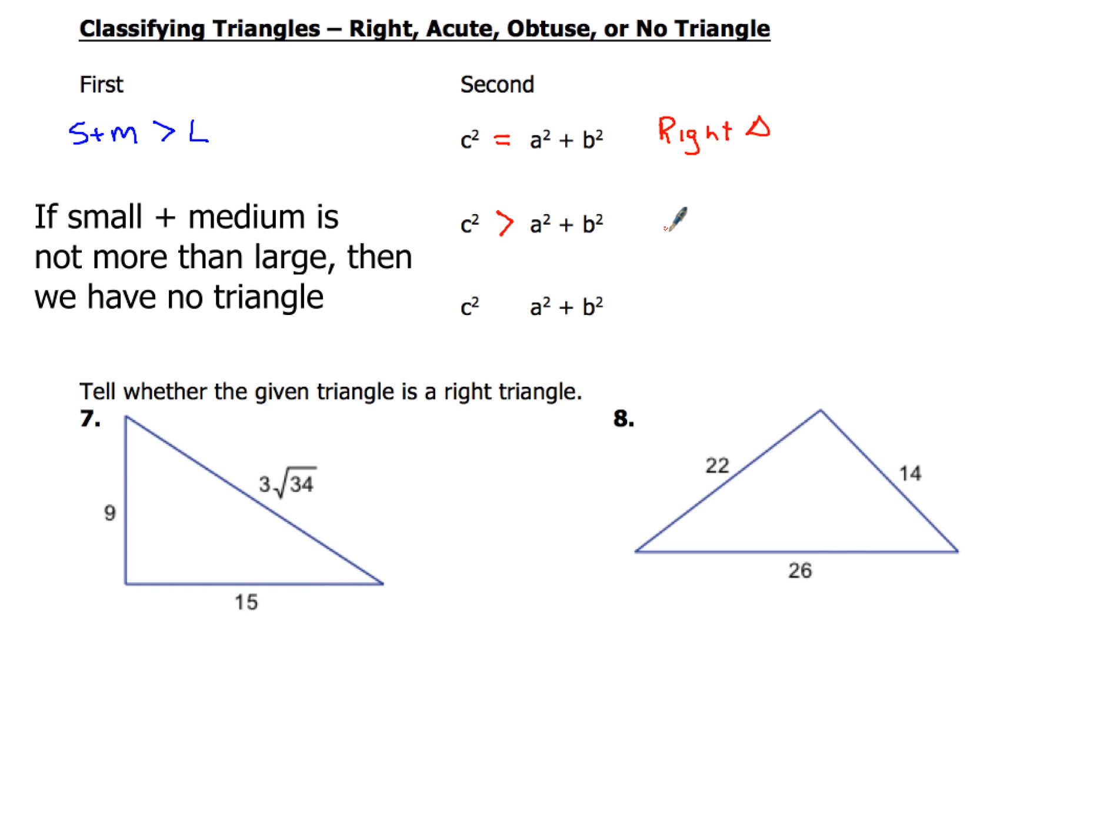Now the one I'm going to give you next, if c squared is greater, that's going to be an obtuse triangle. And then if c squared is less than a squared plus b squared, then that's going to be an acute triangle.